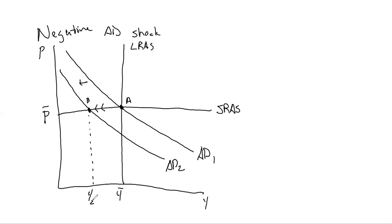Over time, firms are going to be able to change prices in response to this new aggregate demand curve. As firms can lower prices, they're going to do that to bring us back to our long-run aggregate supply curve. Firms slowly lower prices and it brings us back to our long-run aggregate supply at point C. We'll have a lower total price level, but we'll still be at Y bar in the long run. This is pretty much the same thing as we saw in the last video.